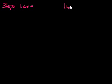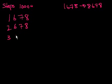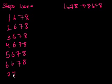Let's count in steps of 1,000 from 1,678 to 8,678. This is pretty straightforward. We start with 1,678 — when you add 1,000 you're adding 1 to the thousands place. So: 2,678, 3,678, 4,678, 5,678. I think you get the point — 6,678.